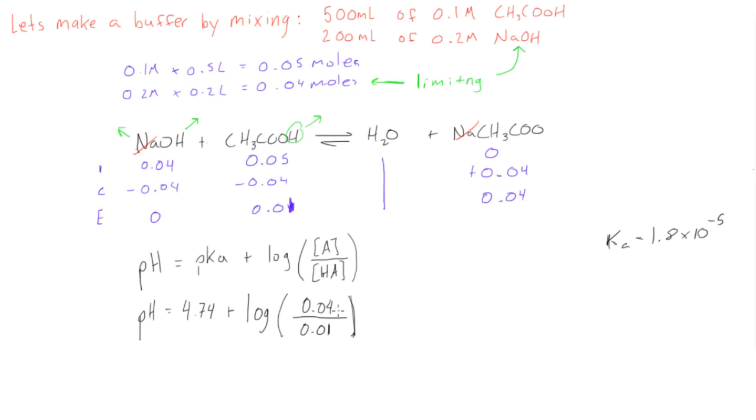All right, so 0.04 divided by 0.01. This is the same thing as 4.74 plus the log of 4. Same thing, this equals our pH. And if we do that, that's equal to about plus 0.602.